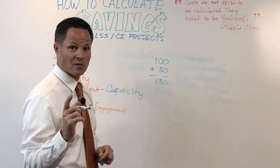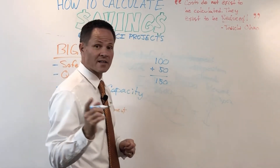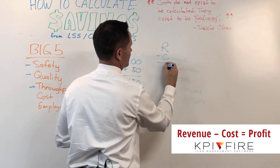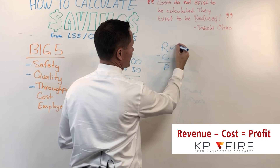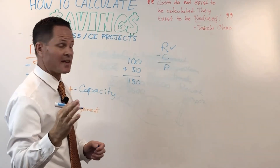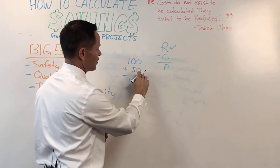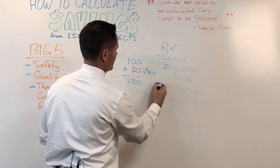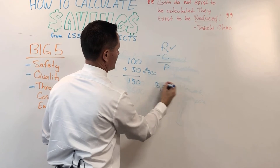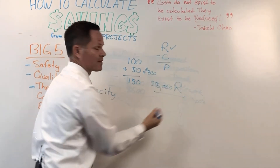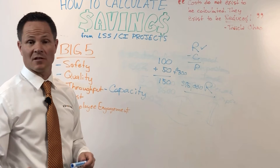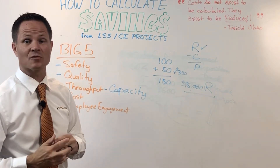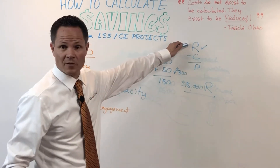I can calculate the savings two ways. One is the revenue or top-line approach: revenue minus cost equals profit. If we look at the revenue side, 50 more units at $300 per unit equals $15,000 of additional revenue per day. That's real top-line revenue growth.